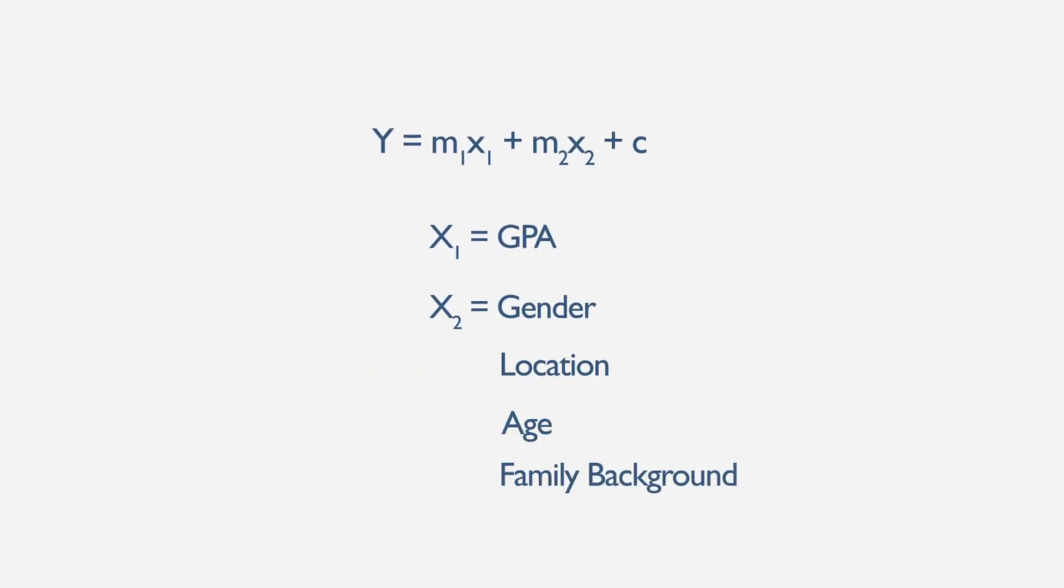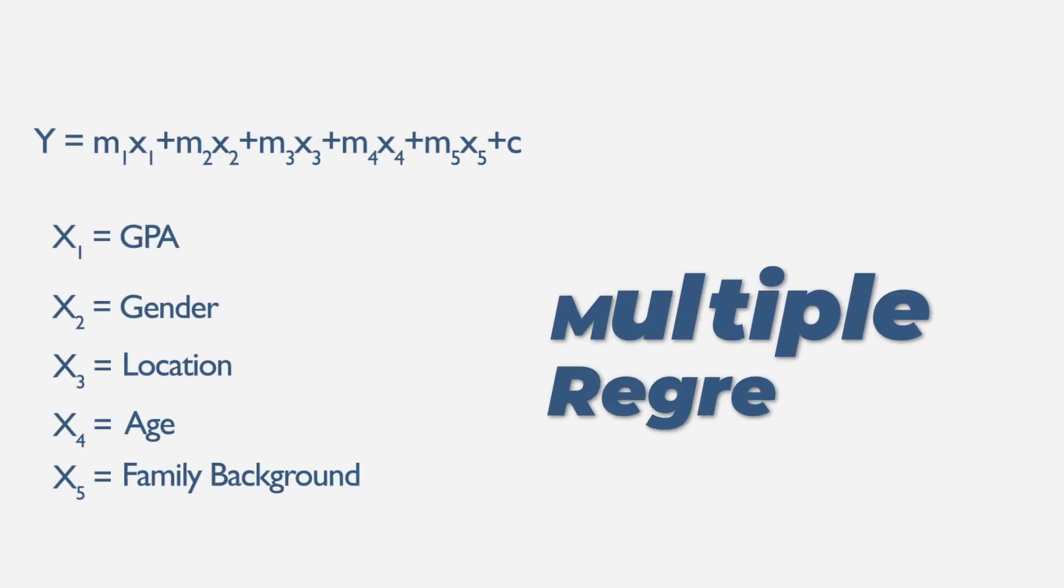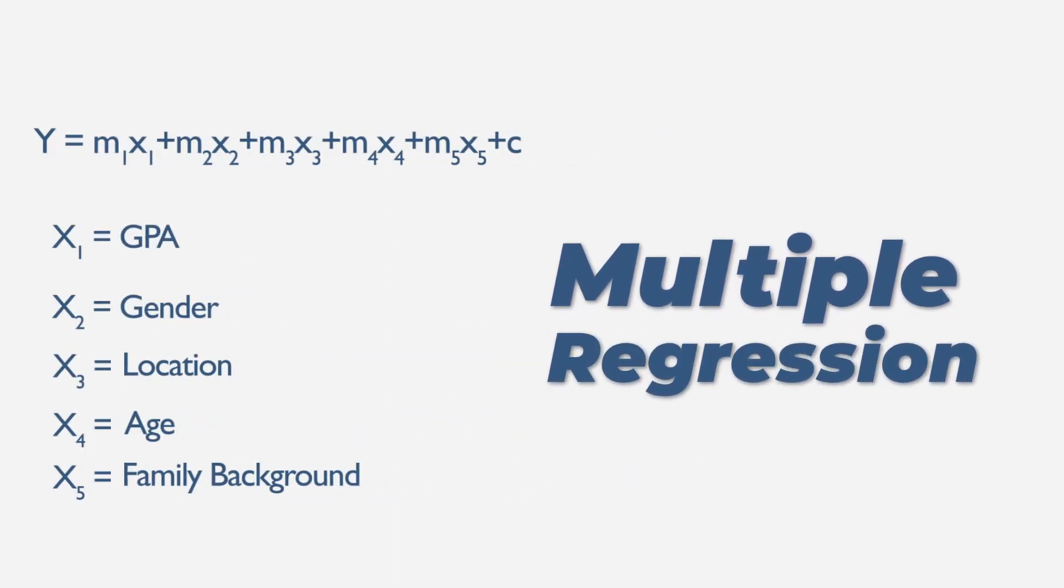age, family background and others making it x3, x4, x5 and so on. This is called multiple regression, where there are multiple factors.